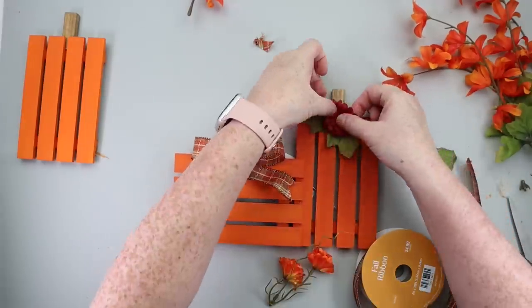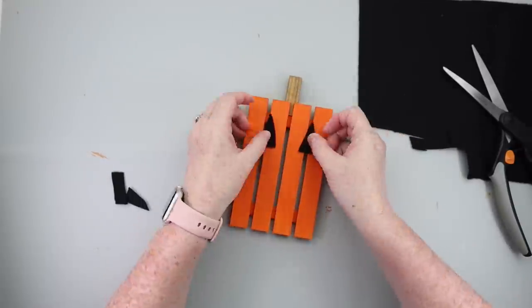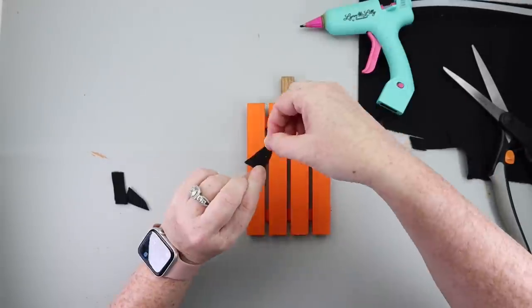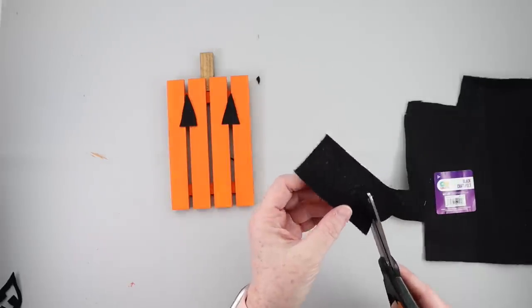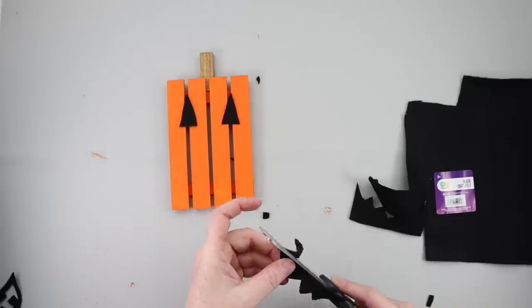For that final pumpkin this one's just turning into a little jack-o'-lantern so I took some black felt and free-handed cutting two triangles for the eyes and then I also cut a felt mouth for it, hot glued those on there and then that one was finished as well.